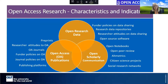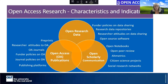The characteristics and indicators of open access research include the meeting of open research data, open access publications, and open scholarly communication tools. That includes funder policies on data sharing, data repositories, researcher attitudes to sharing their data, open source software, open notebooks, open peer review, open metrics for assessing research, enabling citizen science projects, open access journals, and the policies underpinning this move towards open access.